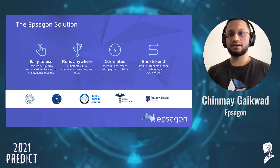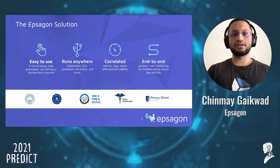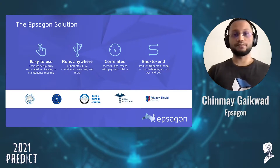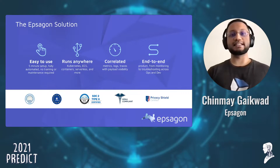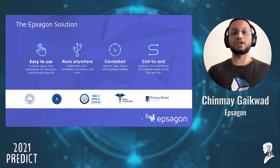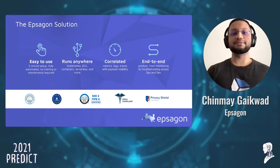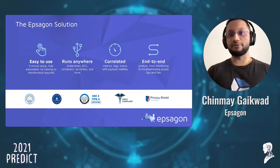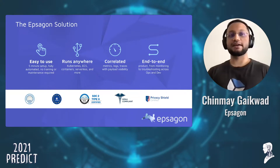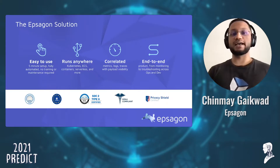We at Epsagon have one of the best distributed tracing solutions, which is super easy to use and low-code. It can run in any modern microservices environment, including Kubernetes, ECS, and serverless. You can correlate metrics, traces, and logs with complete payload visibility. It is an end-to-end solution usable across different business units and teams such as operations and development. Security and privacy is critical — our founding team comes from a heavy security background, which is why we have made an effort to be ISO and SOC certified, and we are also GDPR and HIPAA compliant.